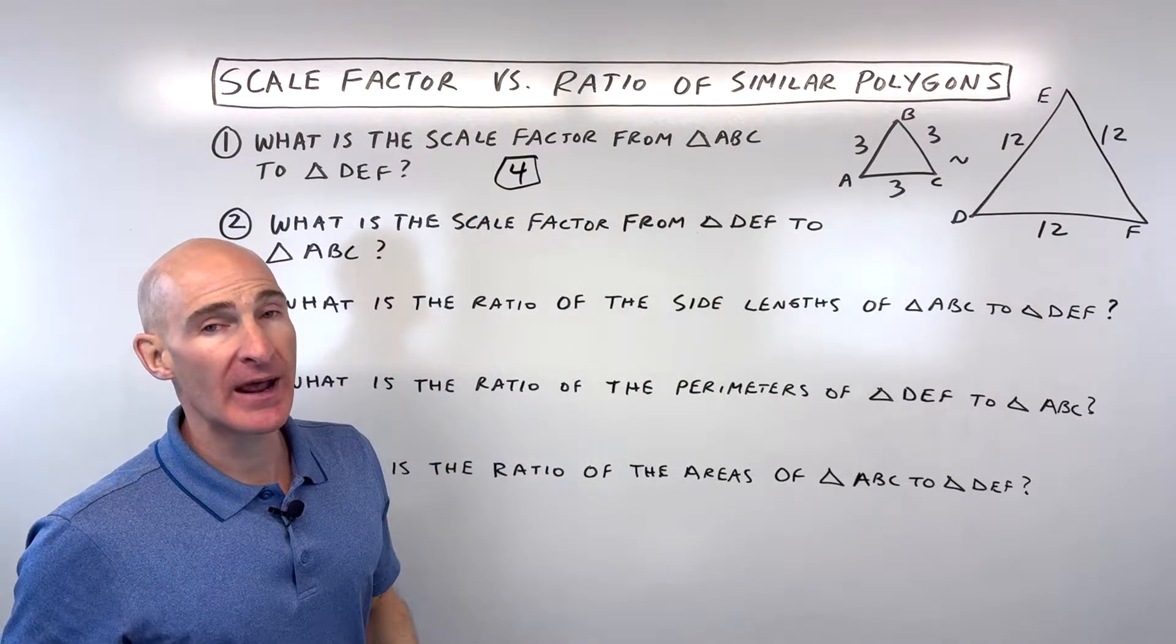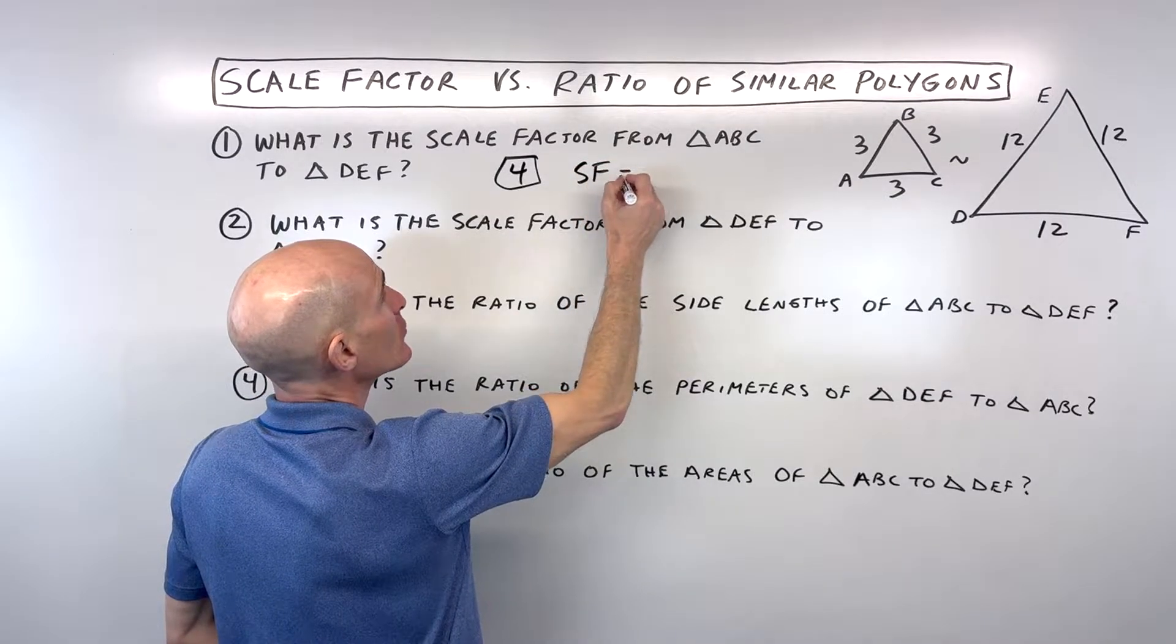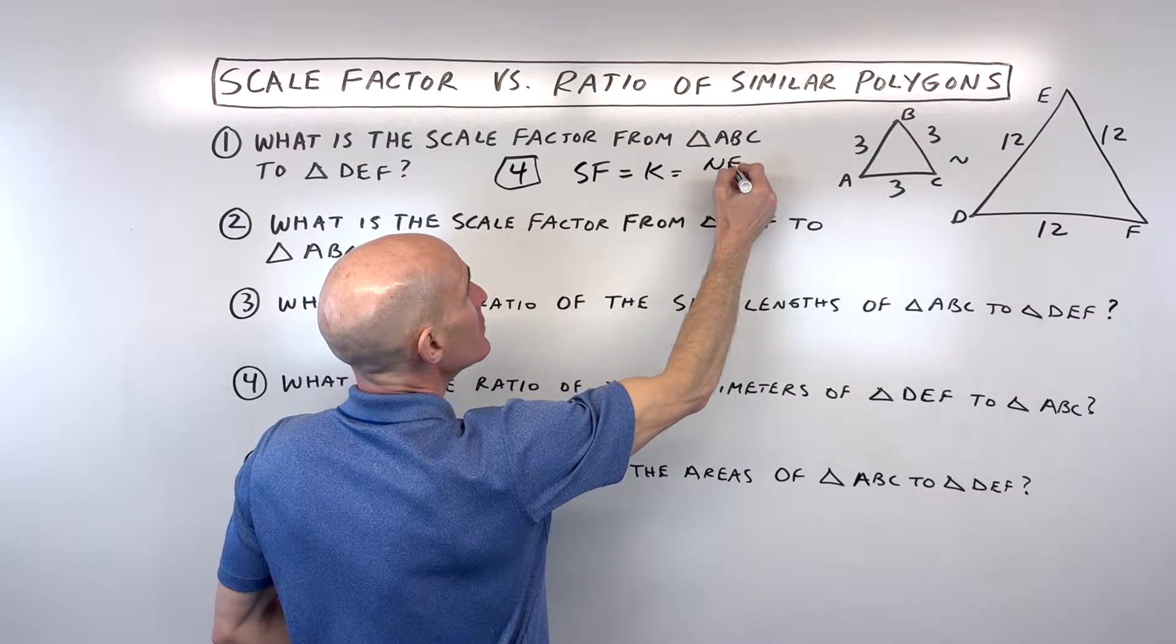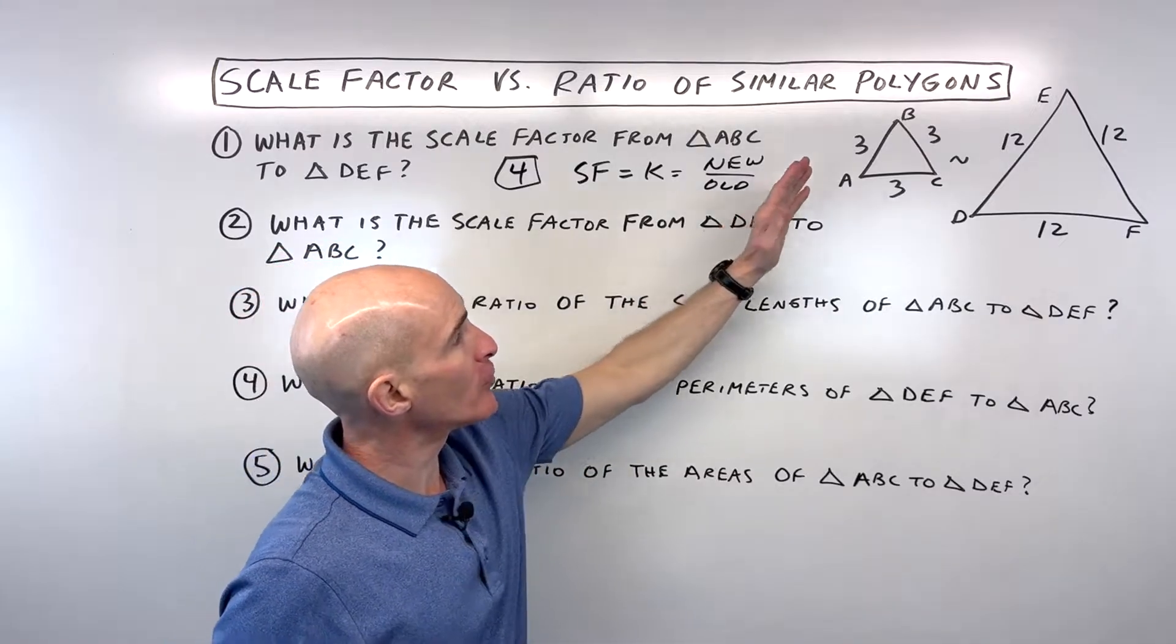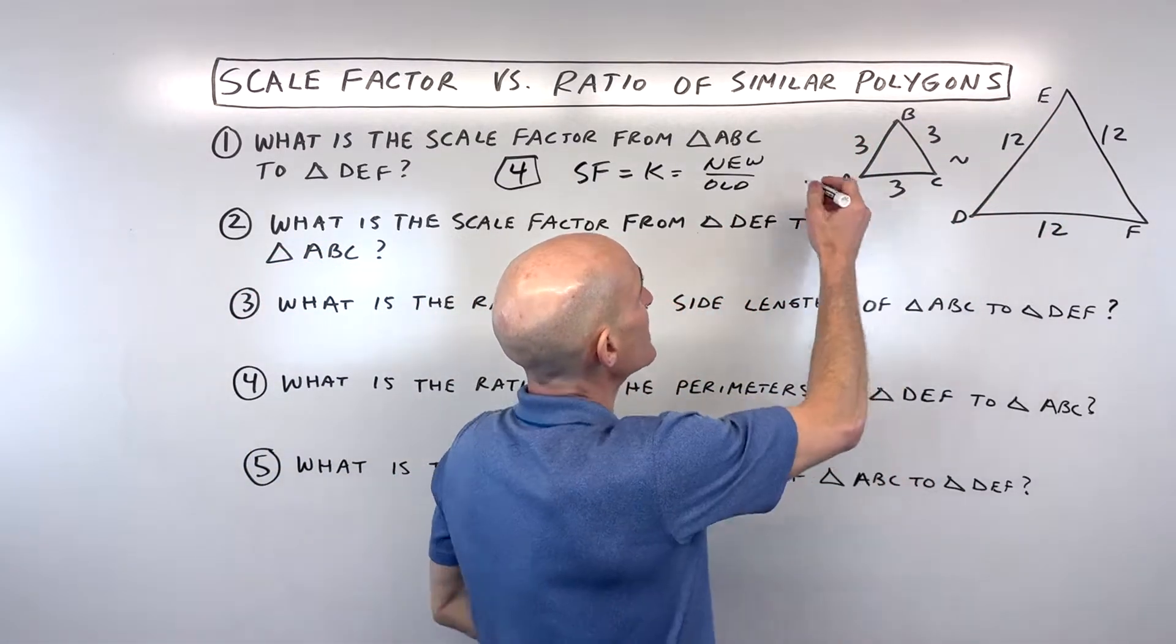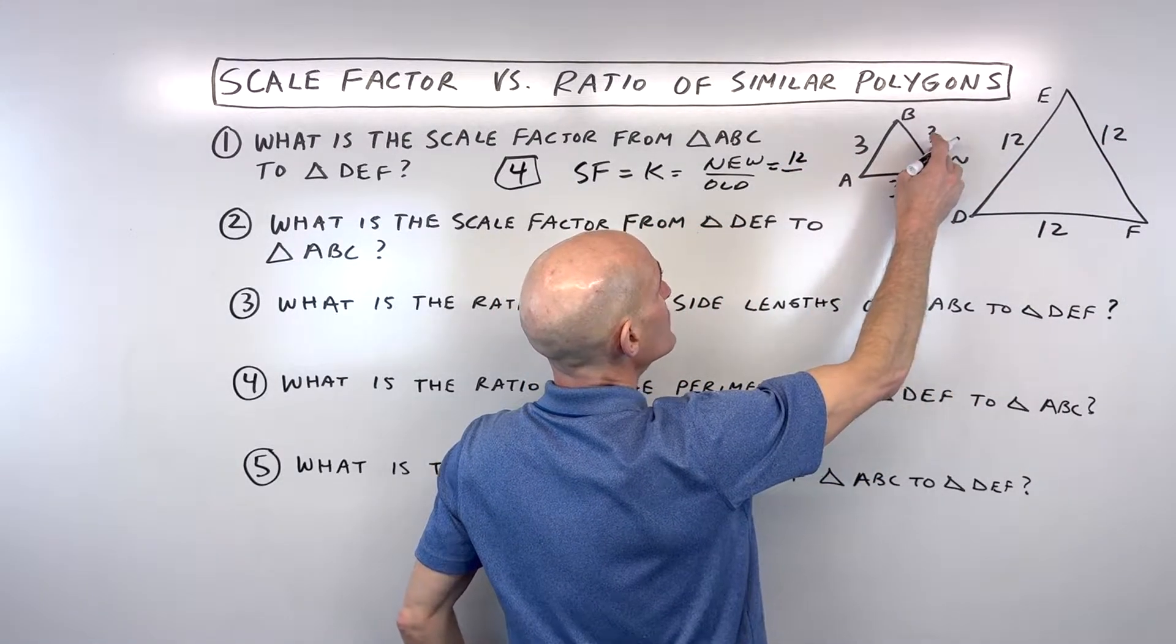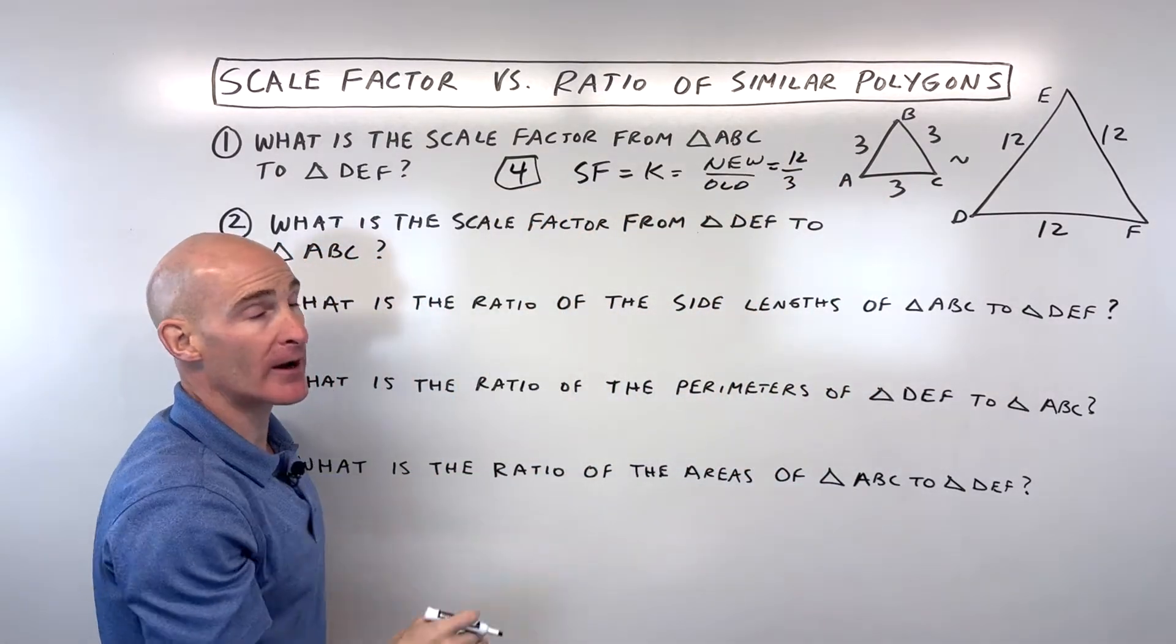Now, if you want a formula, and I oftentimes recommend this to students, I say the scale factor, which they oftentimes use the letter K, it's equal to the new over the old. Now, what do I mean by that, new over old? Well, if we're going from here to here, this is the new triangle, right? So I would say 12 divided by the old triangle side, which is 3. 12 divided by 3 gives us 4, right?